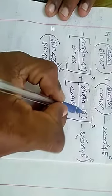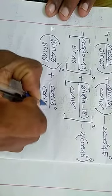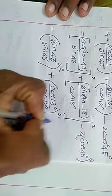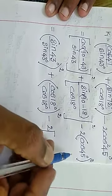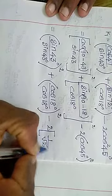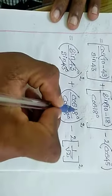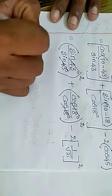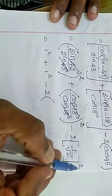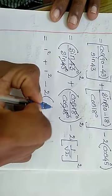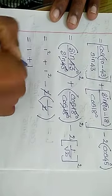Similarly sin(90 minus 18) = cos 18. So cos 18 divided by cos 18 — the whole square. Minus 2 cos 45 degree, where cos 45 = 1 over root 2, the whole square. The terms cancel: numerator and denominator both cancel.